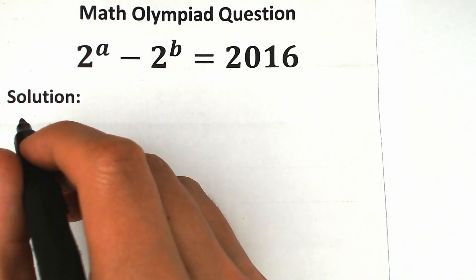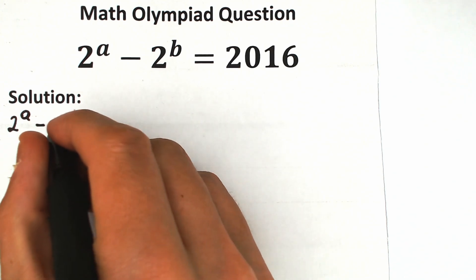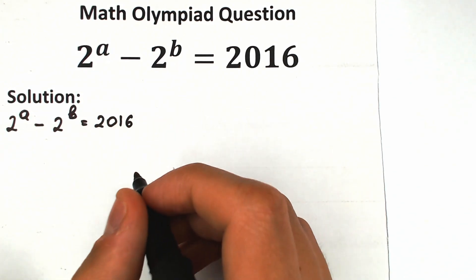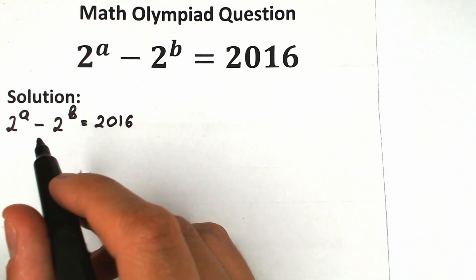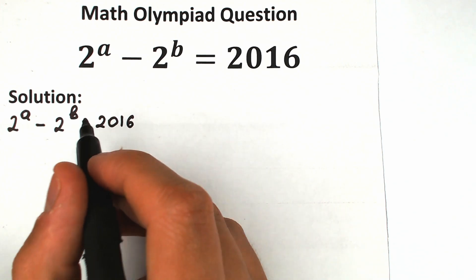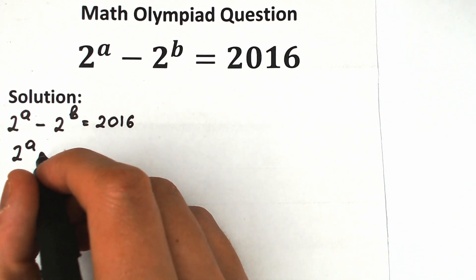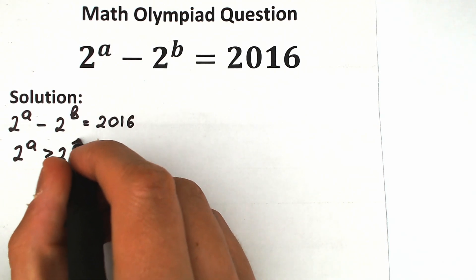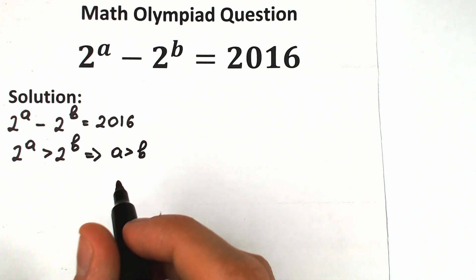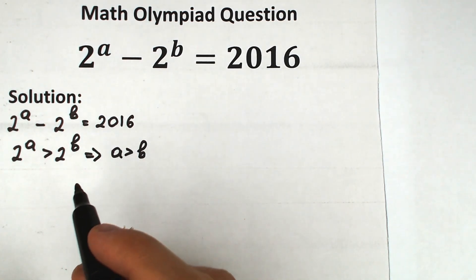First of all, let's rewrite our challenge. We have 2 to the power A minus 2 to the power B equal to 2016. And obviously A is greater than B — this is because we have a positive value on the right-hand side, meaning 2 to the power A is greater than 2 to the power B, so A is greater than B.